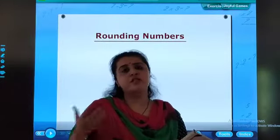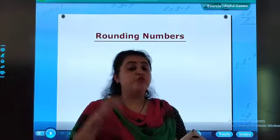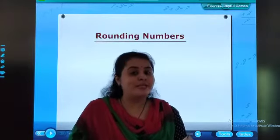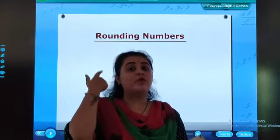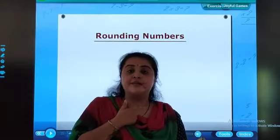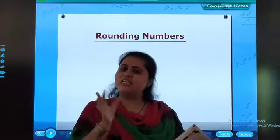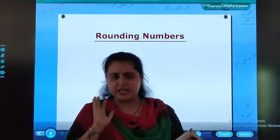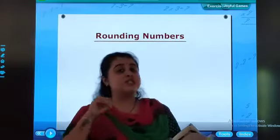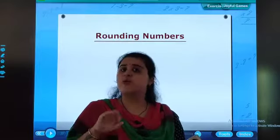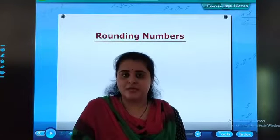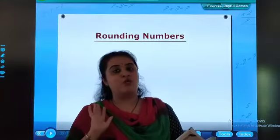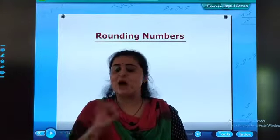If you visit the market, at that time you need to be a little bit speedy in calculations. If I buy these two products, nearly it will be around 80. If I buy these three products, then the cost will be almost 180, 190. You estimate. That is rounding off. It's very easy to perform.